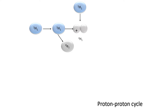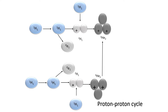Now if this deuterium nucleus gets combined with another proton, there will be generation of a helium isotope. Basically we get the helium isotope at the output, and of course energy gets released here. So the proton combining with proton releases a positron and gives a deuterium atom.